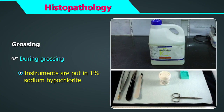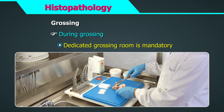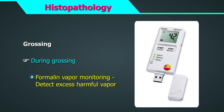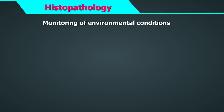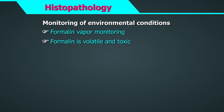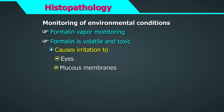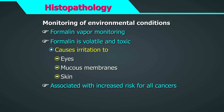Proper gloves, mask, and apron should be worn every day while grossing. Grossing stations should be cleaned with 1% sodium hypochlorite daily after grossing. Instruments used in grossing should be put in 1% sodium hypochlorite after use. A dedicated grossing room is mandatory. Formalin vapour monitoring must be done to detect excess harmful vapour. Apart from temperature and humidity, formalin vapour monitoring forms are an important record in a histopathology laboratory. Formalin is volatile and toxic and causes irritation to the eyes, mucous membranes, and skin, and is associated with increased risk for cancers.